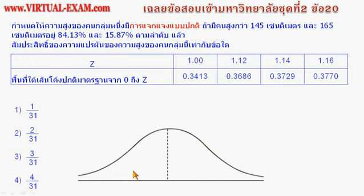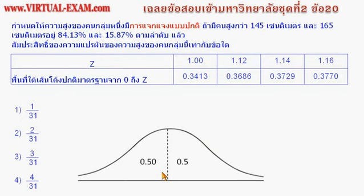การแจกแจงที่มีกราฟเป็นรูประฆังความน่าจะเป็น พื้นที่ใต้เส้นกราฟคือค่าความน่าจะเป็น พื้นที่ทั้งหมดคือความน่าจะเป็นทั้งหมดซึ่งมีค่าเท่ากับ 1 กราฟซีกซ้ายและซีกขวาสมมาตรกัน หมายถึงมีพื้นที่เท่ากัน พื้นที่ทั้งหมดเป็น 1 เมื่อถูกแบ่งเป็น 2 ส่วนเท่ากันจะได้ส่วนละ 0.5